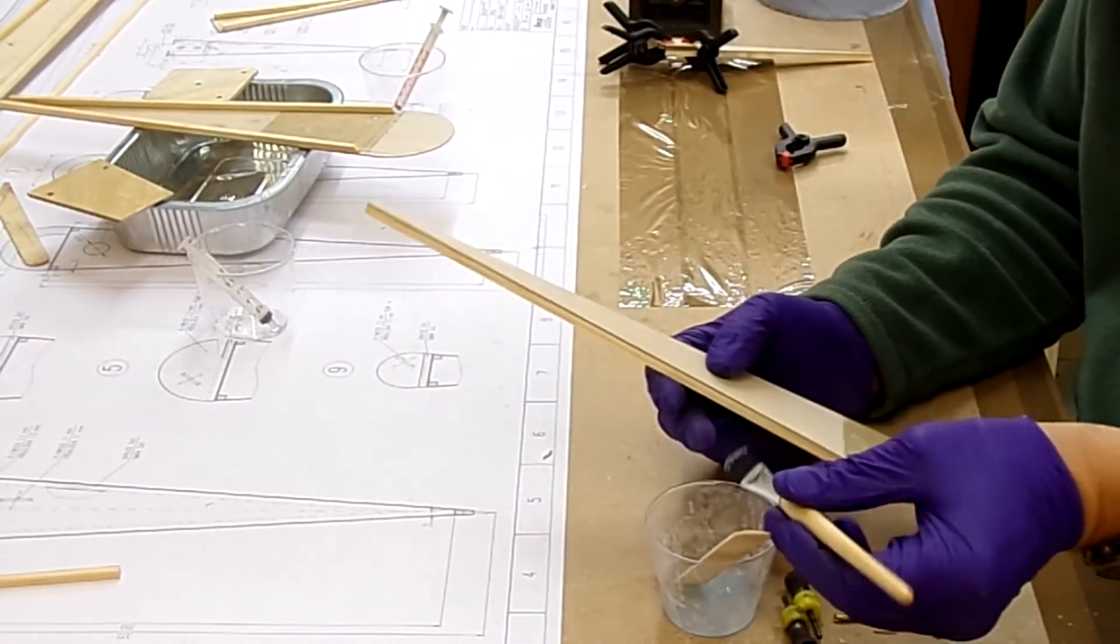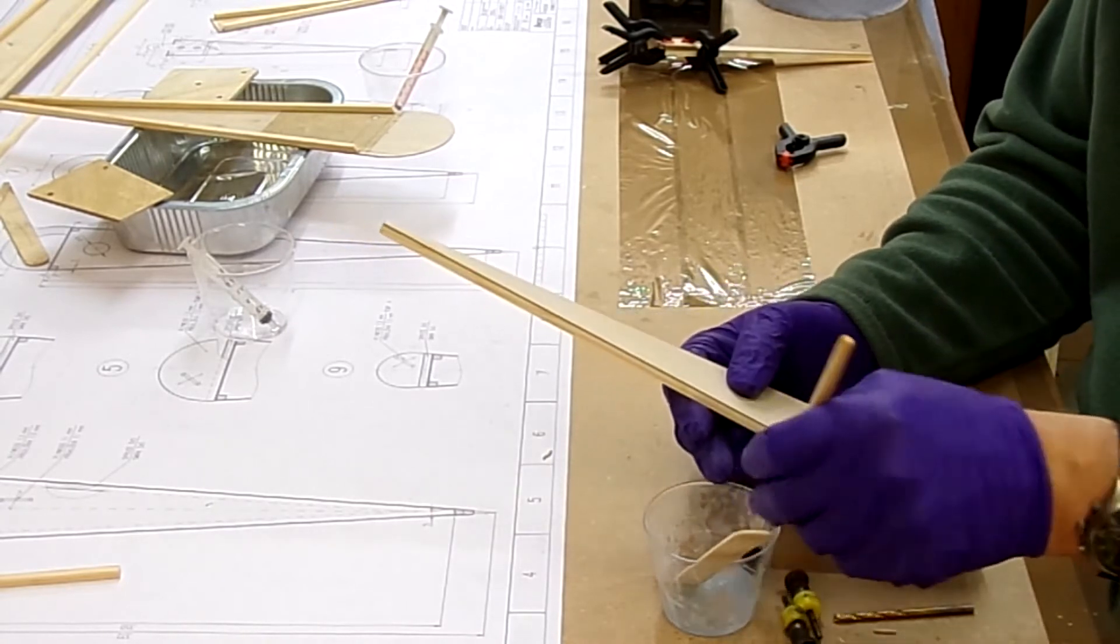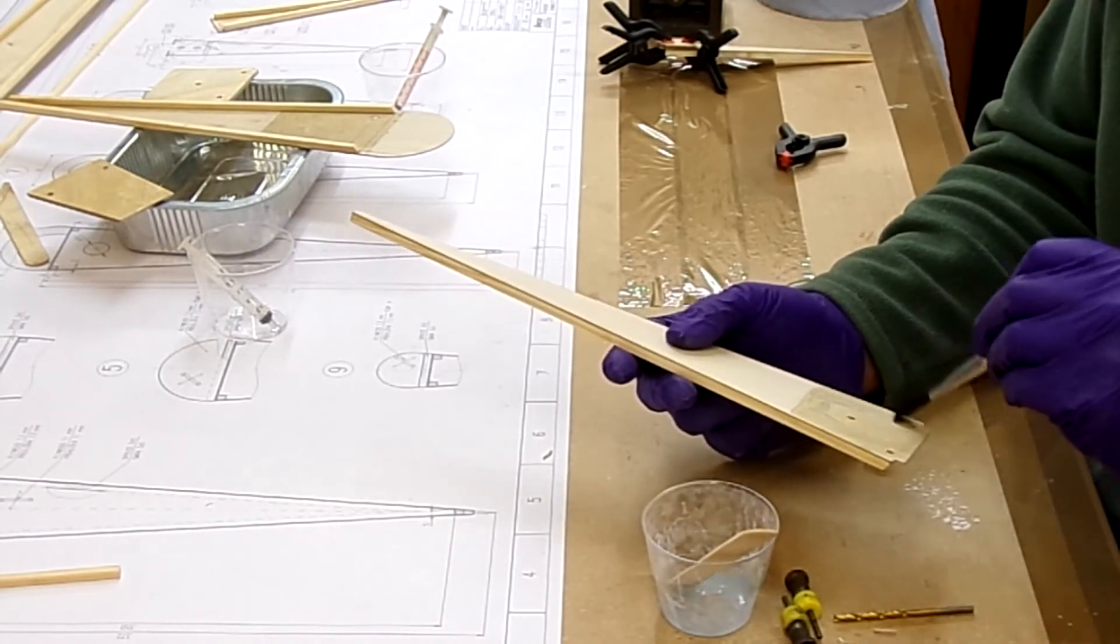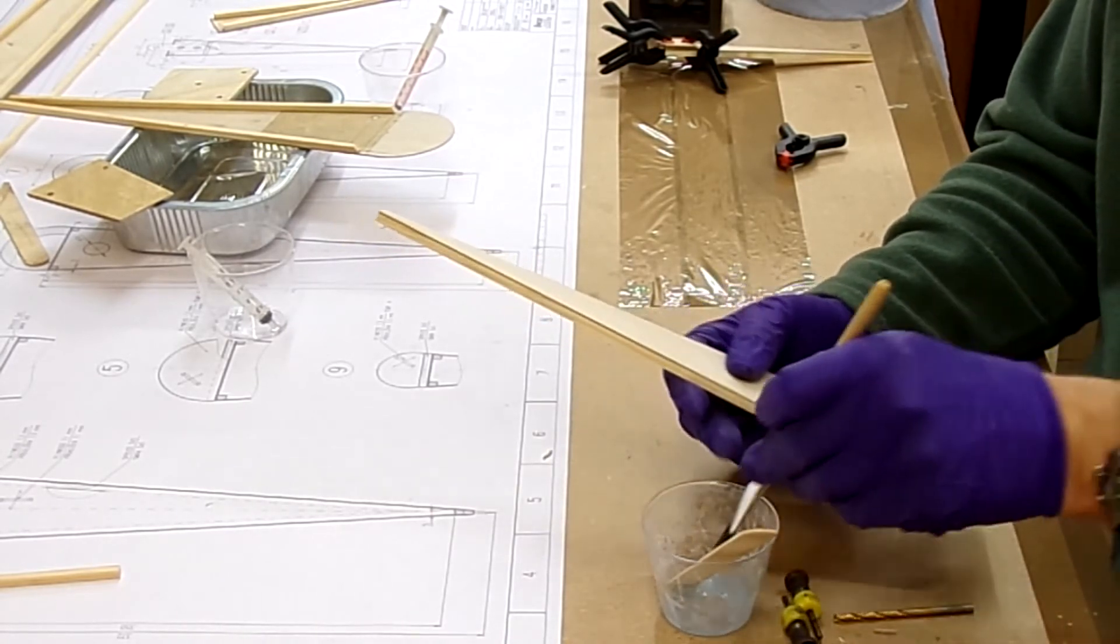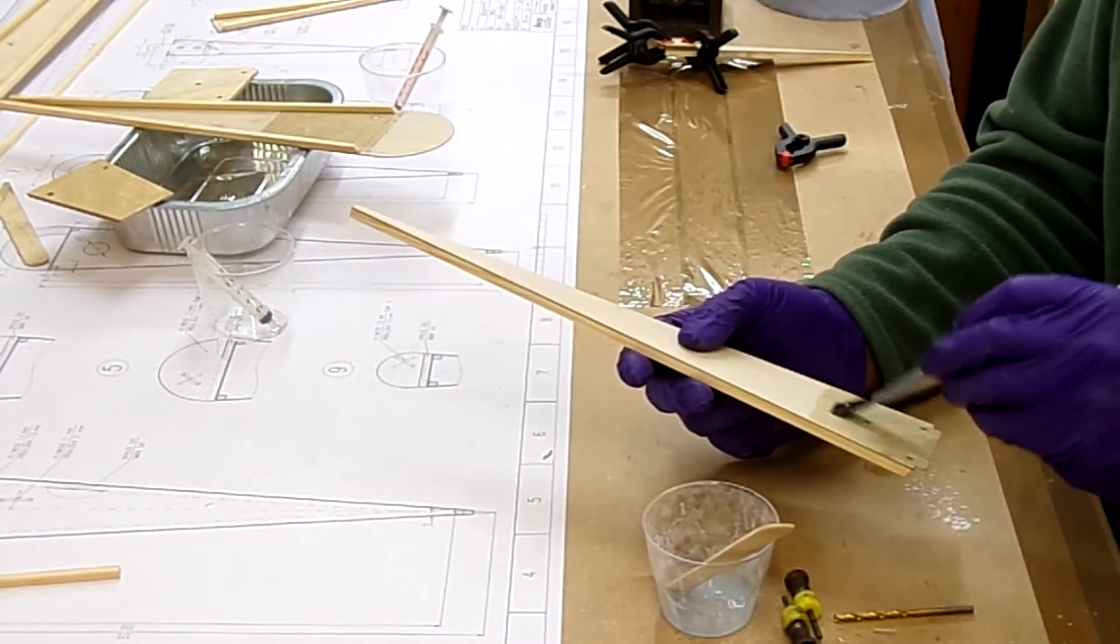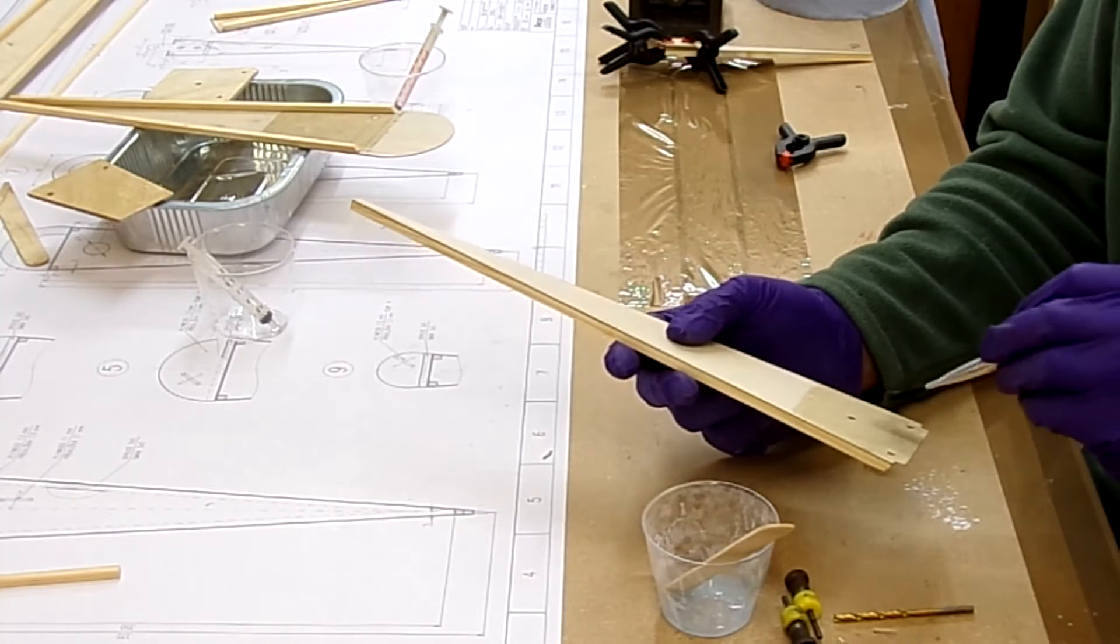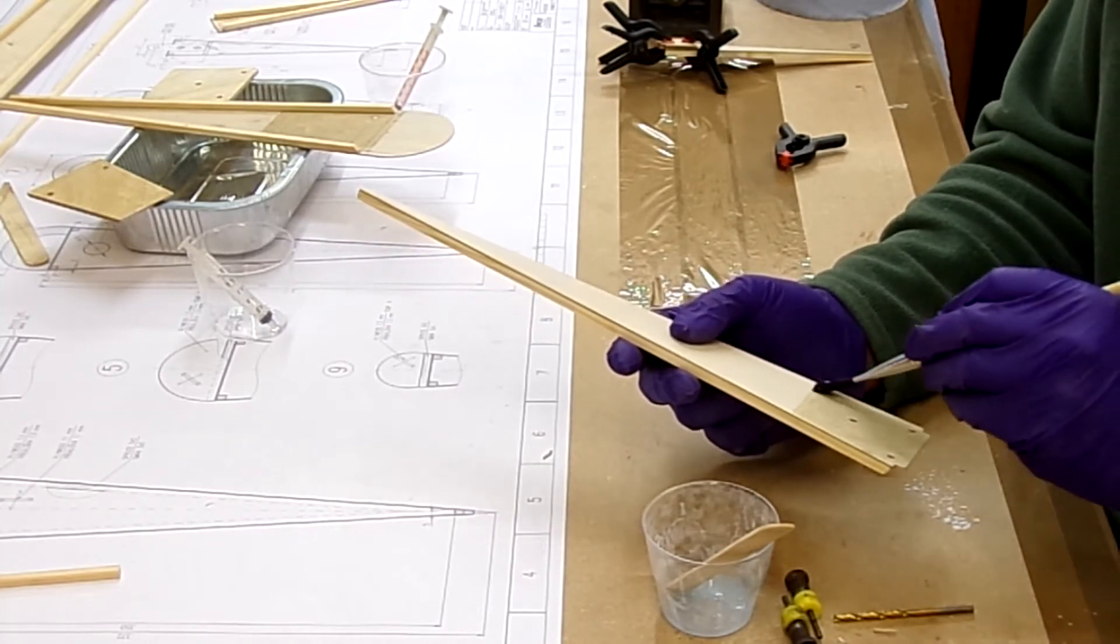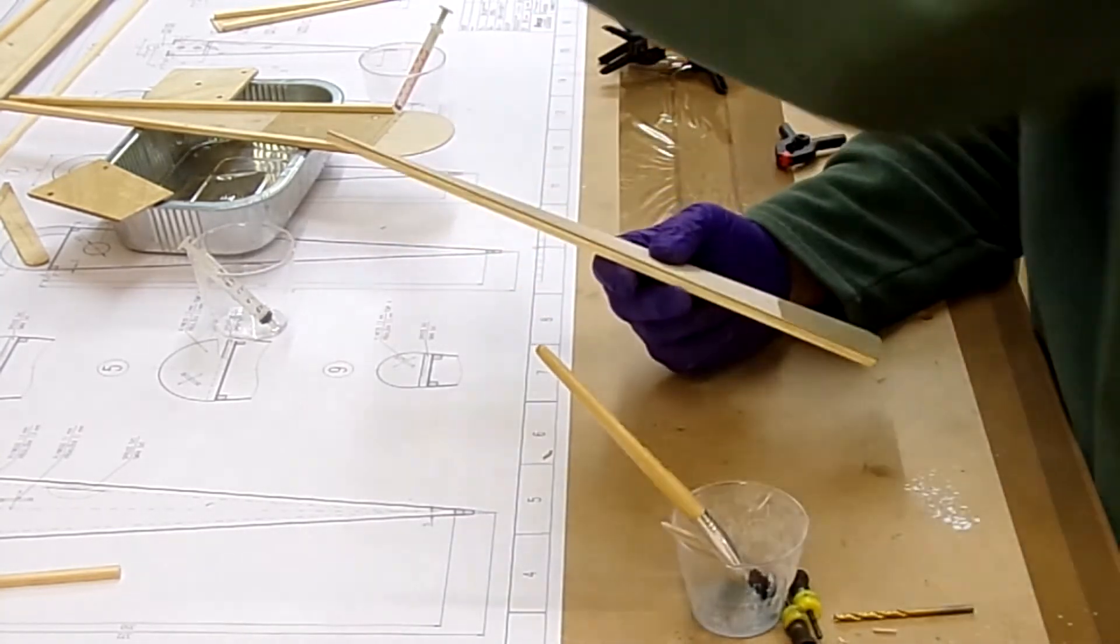So the reason for applying this is it takes up any small gaps or imperfections in the surface and helps to fill it, rather than using just pure resin which would be brittle. But it actually acts as part of the structure within the glue joint itself. Nice even coat using a brush.